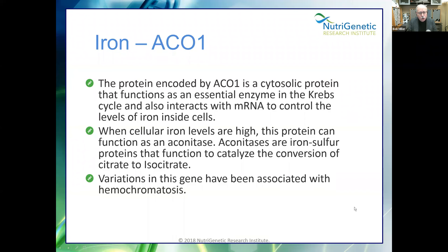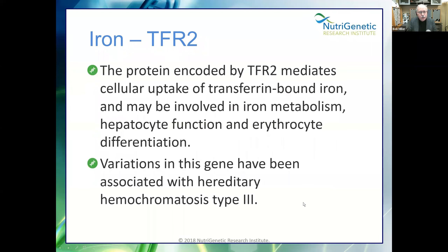TFR2 mediates cellular uptake of transferrin-bound iron, and variations in this gene have been associated with hereditary hemochromatosis. Could you have mutations in TFR2 with iron doing quite well? Absolutely. But what happens when you've also got problems with your copper, vitamin A, and ceruloplasmin? You might store iron inside the cell and create this cascade. We need to do more research, but this combination is when it becomes significant.